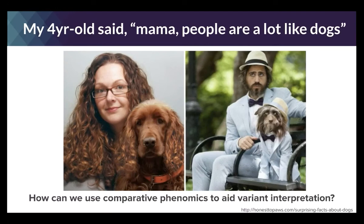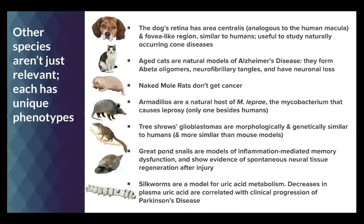In the context of understanding genomics, there's a great need to understand the variability in phenotypic features that are the outcomes of genomic variability, and how we can use this information to interpret the genome for purposes such as diagnostics, mechanism discovery, risk assessment, and many other things. Other species aren't just relevant — each one has specific, unique phenotypes that tell us something about the way in which the genome works.